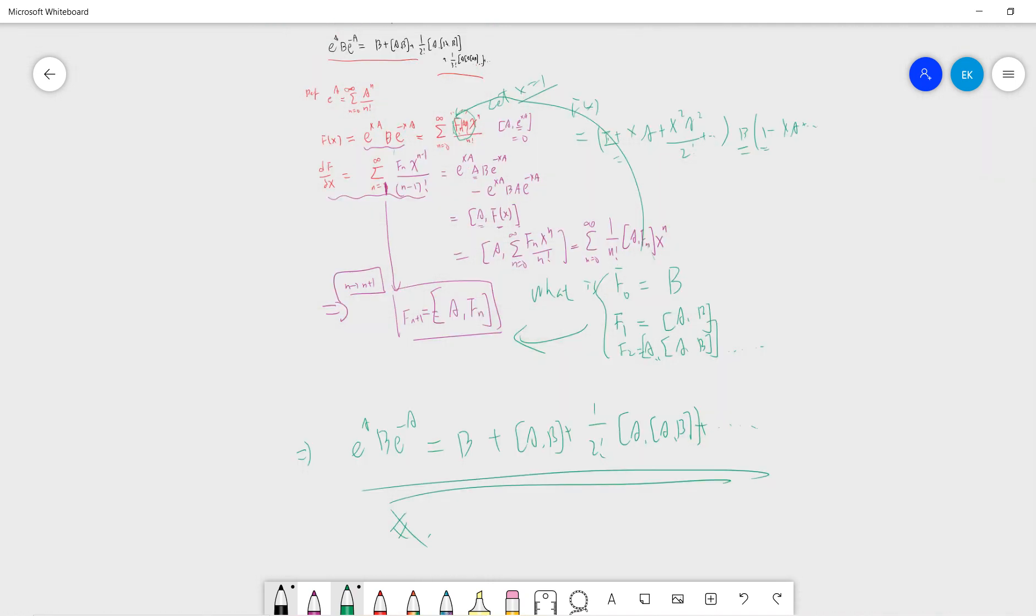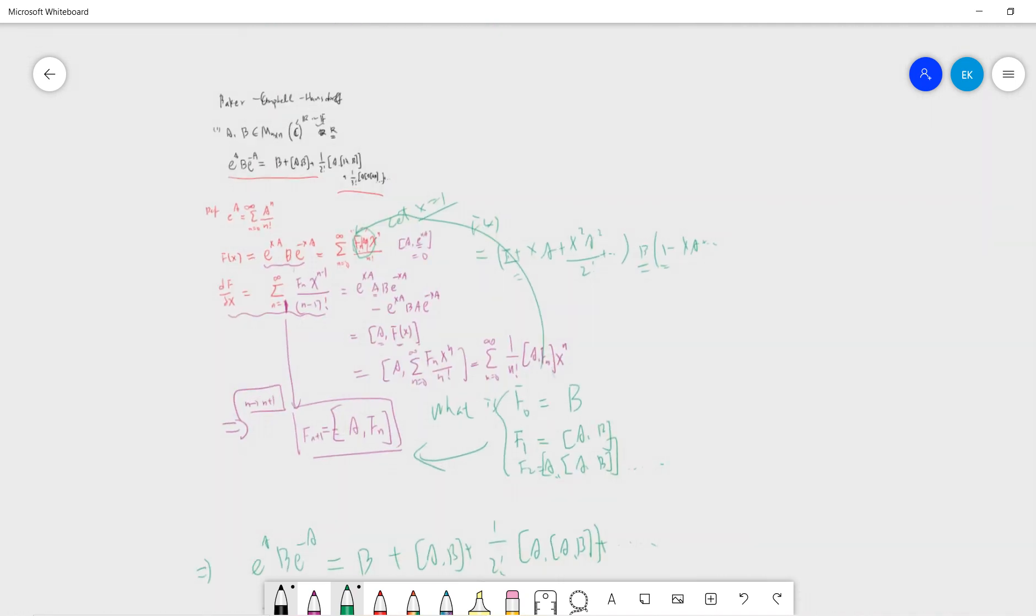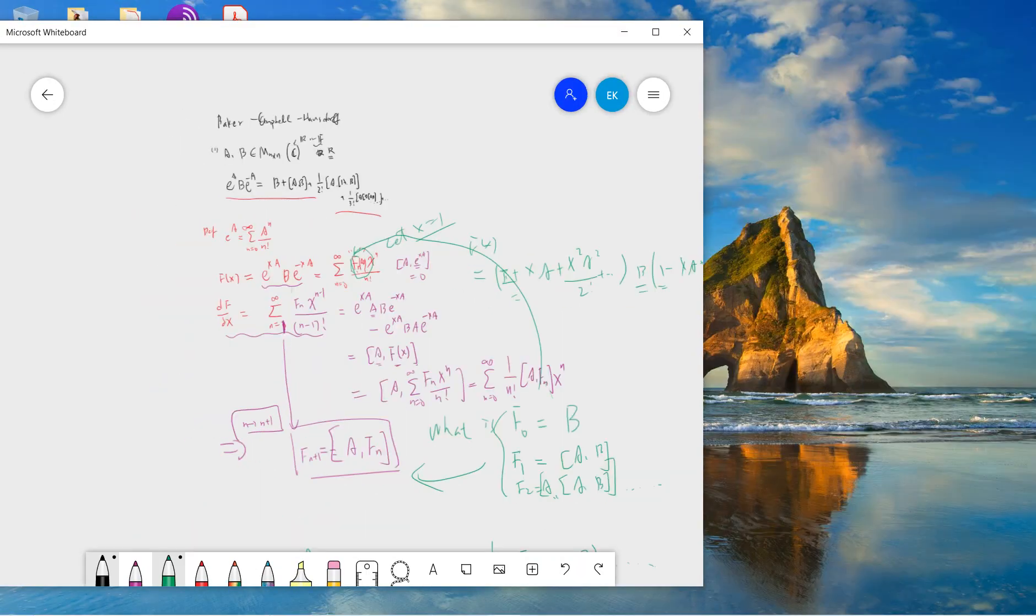Next time we will prove the second Baker-Campbell-Hausdorff formula, which is much more difficult. We will use the beta function. Don't worry, I will at least give a lemma or give you the result of the beta function. Don't worry about details, and be sure to subscribe to my channel. I will see you guys in the next proof.